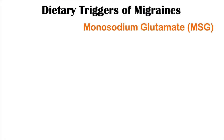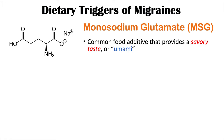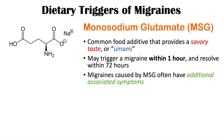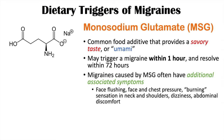Another trigger is monosodium glutamate, or MSG — a common food additive that provides a savory umami taste from the amino acid glutamate. After consumption, MSG may trigger a migraine within one hour, and the migraine often resolves within 72 hours. MSG-triggered migraines often have additional associated symptoms including face flushing, face and chest pressure, burning sensation in the neck and shoulders, dizziness, and abdominal discomfort.